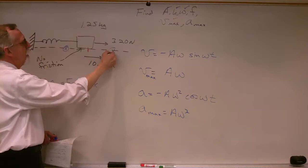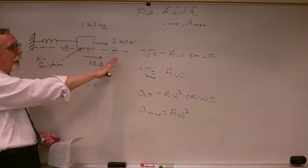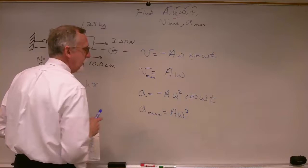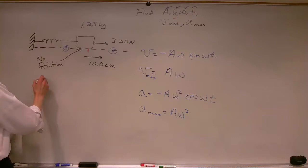When the object is at its farthest position to the right, x is largest positive, so the force is largest negative and the acceleration has its greatest value to the left. So v max equals A omega and a max equals A omega squared.